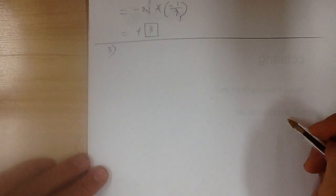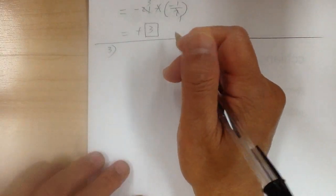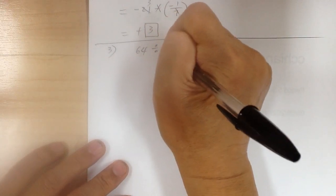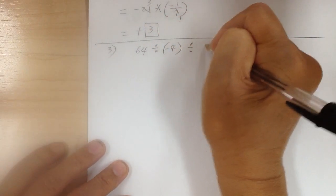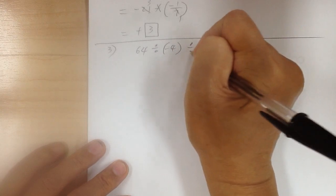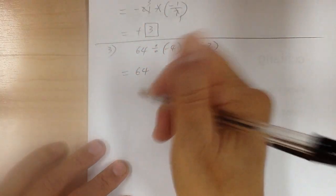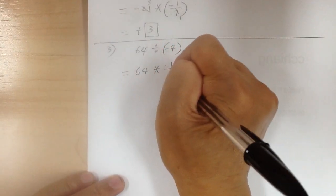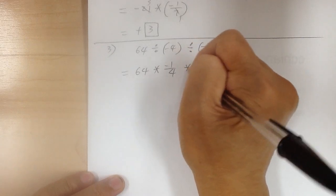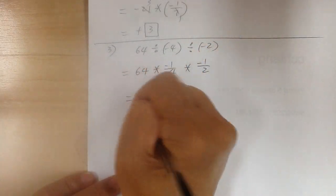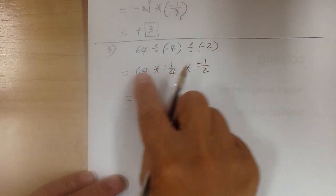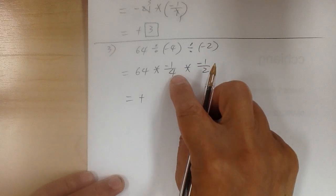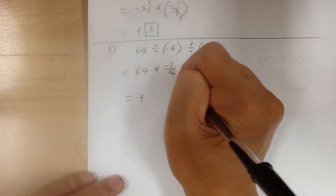Number 3. You have 64 divided by negative 4, divided by negative 2. You want to convert all the division into multiplication, so this becomes multiplying negative 1 over 4. Division becomes multiplication, so it becomes negative 1 over 2. So negative times negative times negative will give you plus.